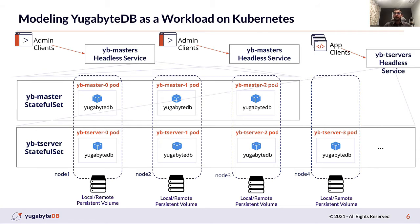The YB Master deployment needs one StatefulSet and two services. One of these services is a headless service that enables the discovery of underlying stateful pods, and the other is a load balancer needed for accessing the admin UI. The YB-TServer needs just one StatefulSet and one headless service. The StatefulSet is the actual data node, so you can easily scale your cluster up and down by just changing the replica count, and it will trigger a rolling upgrade without any maintenance window. The headless service provides a load balancer for client applications to connect to the database.